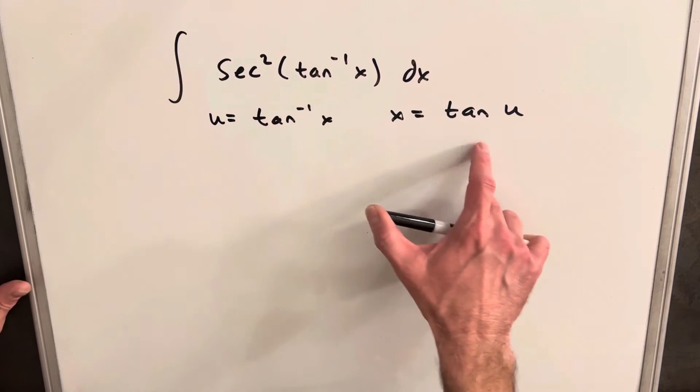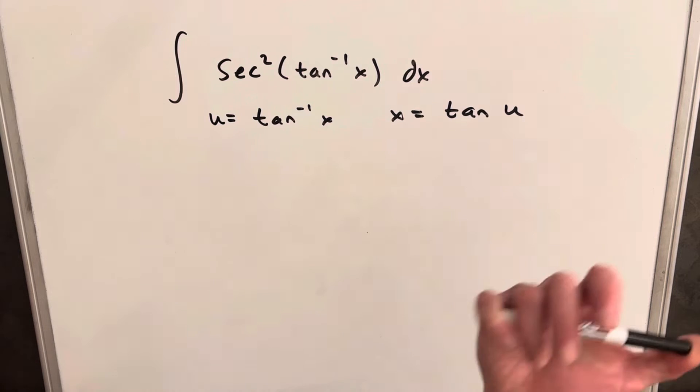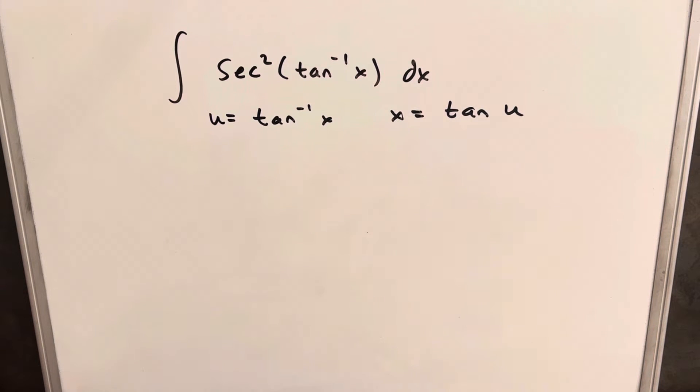but just kind of looking ahead, secant squared u times secant squared u is going to be secant to the fourth u. Not terrible. We could do that, but... So actually, rather than taking the derivative here, I think I prefer a different way.